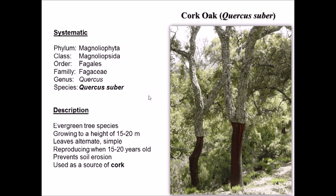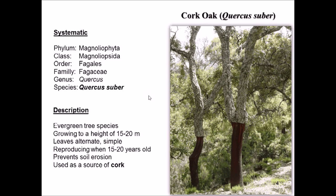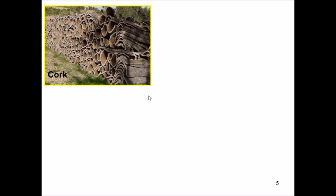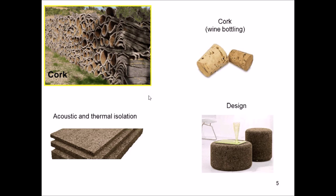From an ecological standpoint, this tree can prevent soil erosion. It also has economic importance as a valuable source of cork, and it contributes to the preservation of biodiversity and carbon storage. Cork can be used for acoustic and thermal isolation, wine bottling, and also for design in countries like France, Portugal, and Spain.